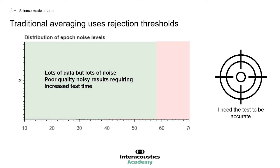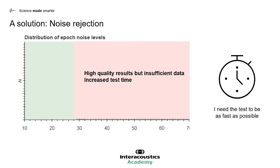To recap: if we have very high rejection levels, this allows lots of data in but it also allows lots of noise in. If lots of noise is in the recording then this is going to lead to poor quality results and we're going to have to increase test time to reduce the noise. The opposite happens if we reduce the rejection level — we get very high quality results, but as the data is insufficient it's going to again take a long time to perform the test as we need to spend more time collecting that high quality data.